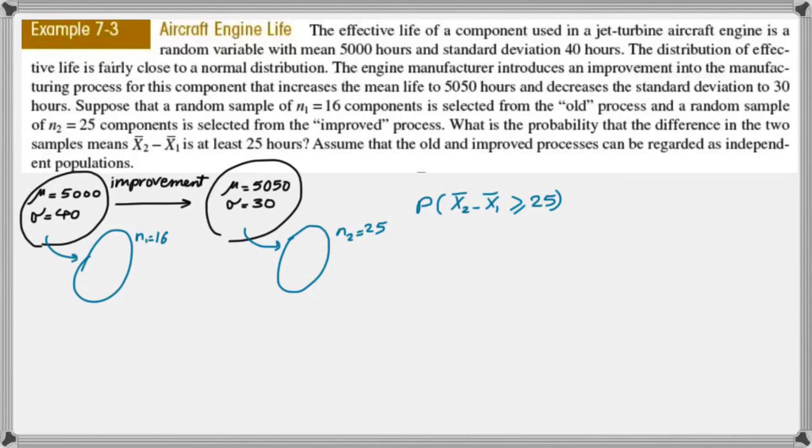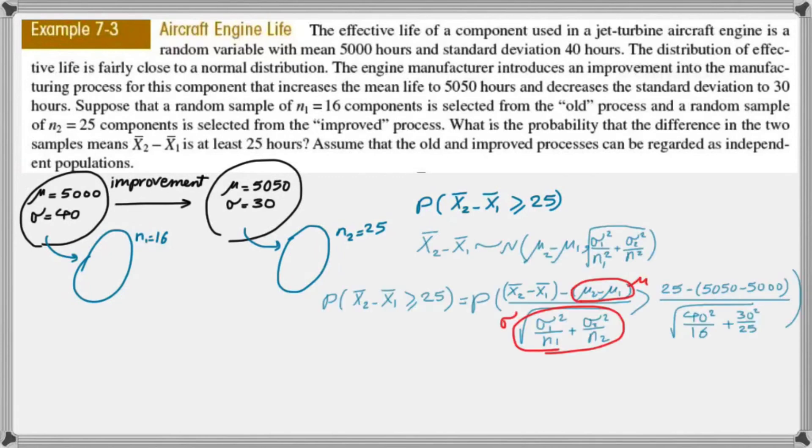Since x̄₂ minus x̄₁ follows a normal distribution, to standardize that we have to deduct the value of the average and divide it by standard deviation. So let's go ahead and do that. So you can standardize both sides of this inequality inside the probability term. So you're going to write x̄₂ minus x̄₁ minus its μ divided by its σ. That gives you the z. You have to do the same calculation on the right-hand side. So 25 minus μ₂ minus μ₁, and then you have to divide it by the standard deviation term.